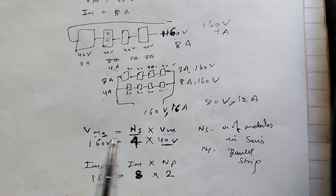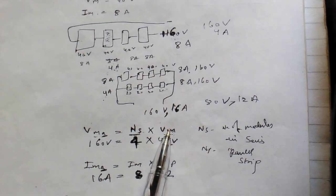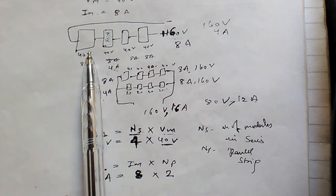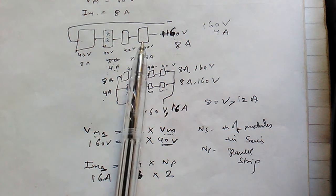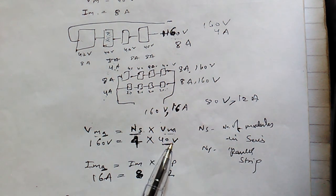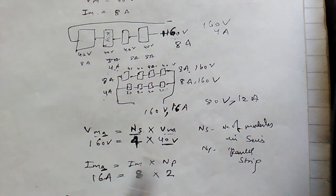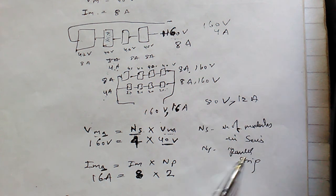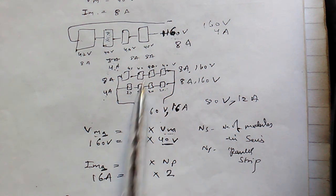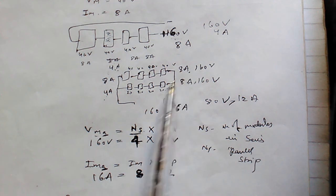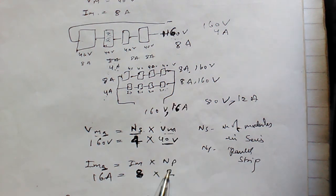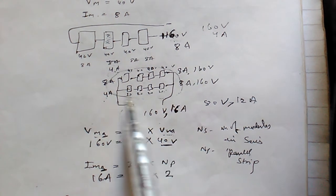The array voltage formula is: Vma = Vm × Ns, where Vm is the single module voltage and Ns is the number of modules in series. For example, 40 volts × 4 modules = 160 volts. The array current formula is: Ima = Im × Np, where Np is the number of parallel strings. For 8 ampere × 2 strings = 16 ampere total array current.